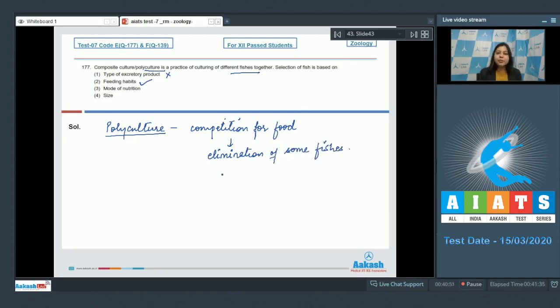because competition for food may lead to elimination of some fishes. Number three, mode of nutrition is also incorrect as mode of nutrition refers to autotrophic or heterotrophic, and all fishes are heterotrophic. Size is also incorrect as size of fish does not interfere with polyculturing or composite culturing of fish. So the correct answer here becomes option number two.